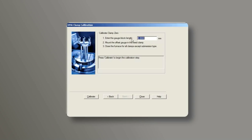From the control software, enter the length of the offset gauge. Then click on Calibrate.